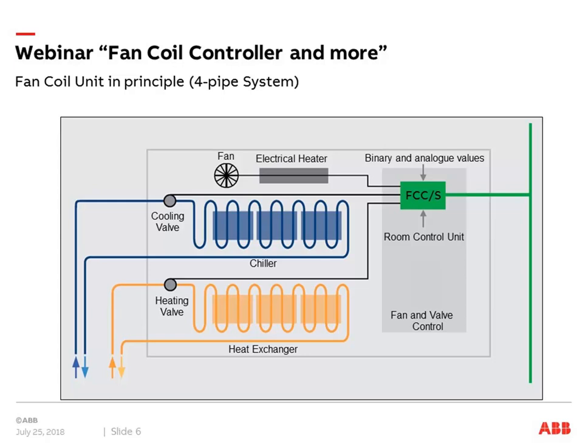With our Fan Coil Controller we can connect different signals. We can connect binary and analog values: binary contacts such as a window contact, and analog signals such as a floor temperature sensor. Our room control units can also be directly linked to our Fan Coil Controller.